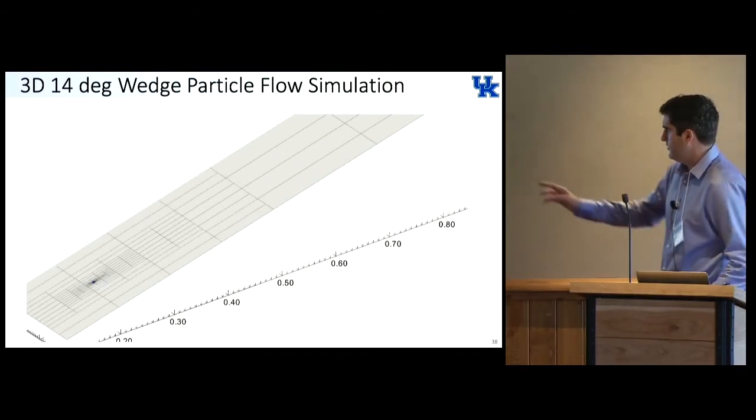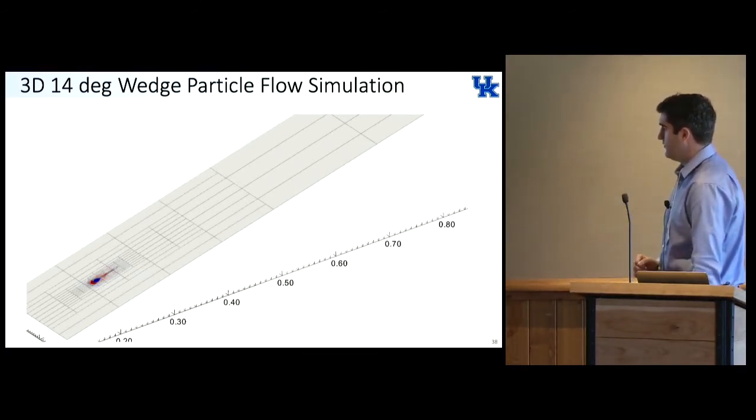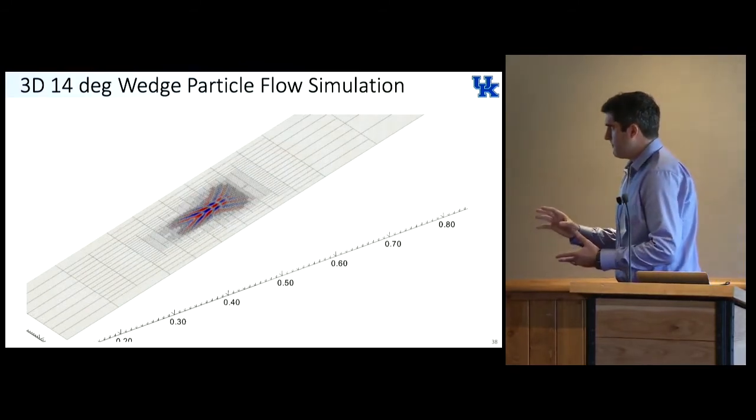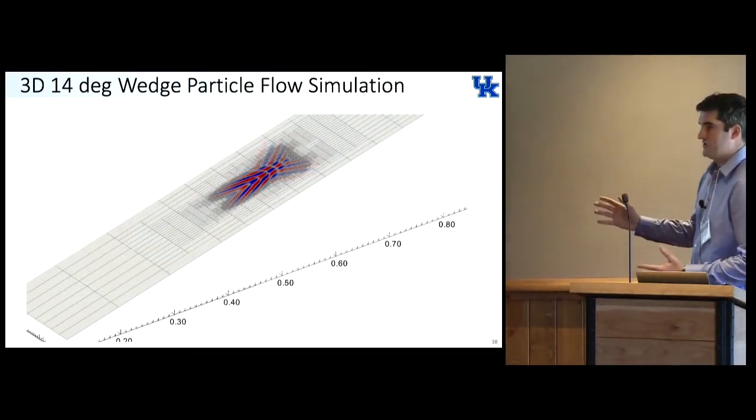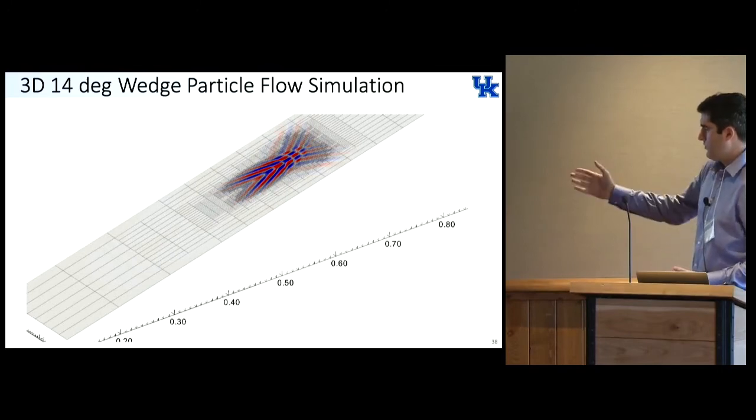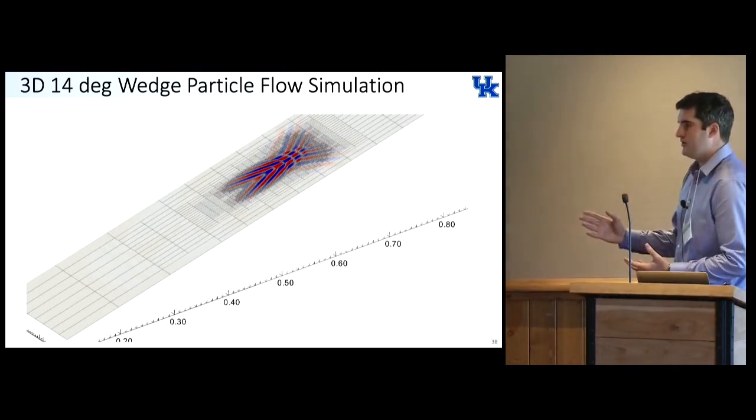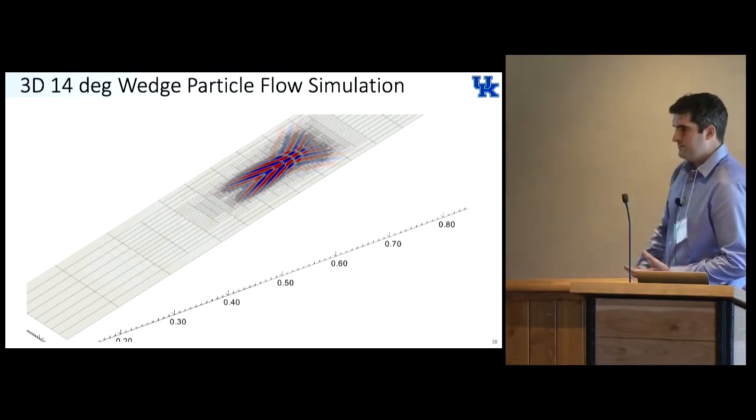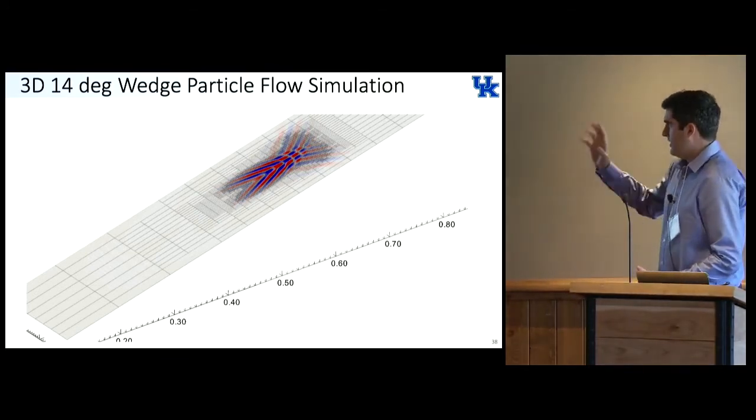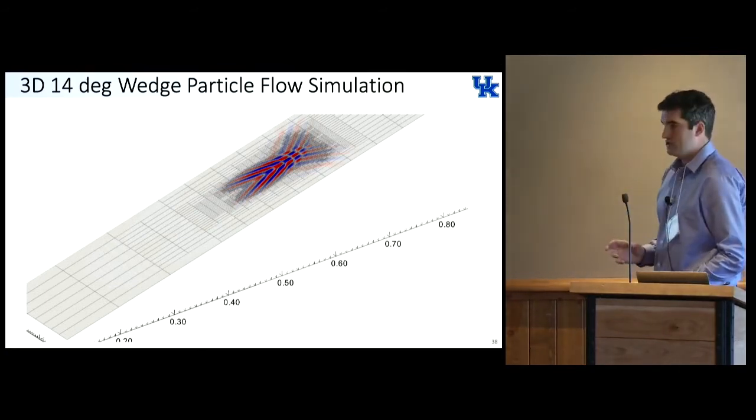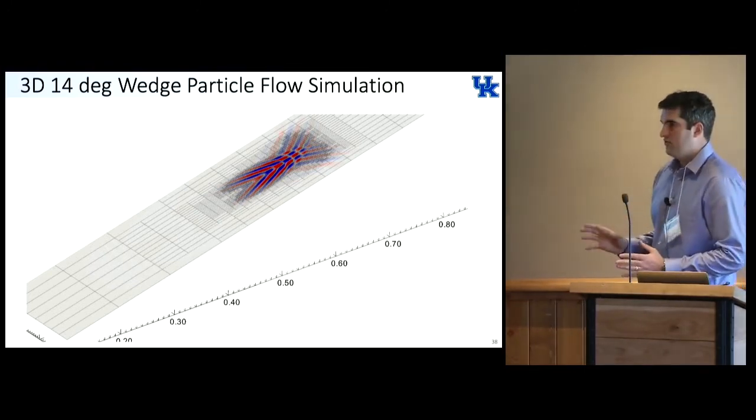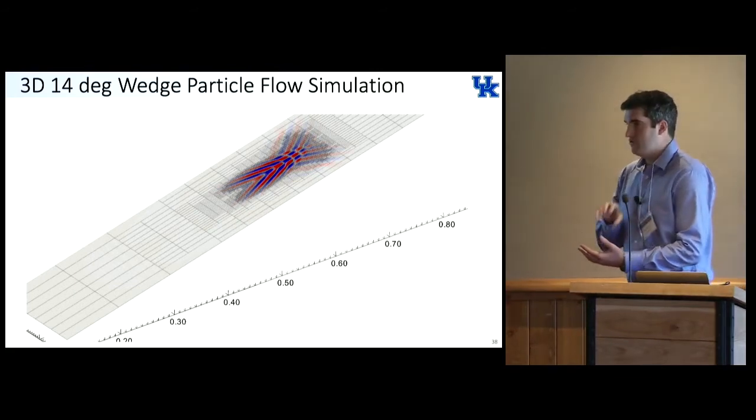Here we show the AMR tracking the first mode as the wave packet propagates downstream, refining, derefining. Obviously on a static mesh, the whole thing would have to be resolved the entire way. Whereas in this case, if it's a static mesh approach, this problem scales with the length of the domain. If I want to make the domain twice as long, but with the AMR approach, the problem scales with the size of the wave packet. It doesn't matter if I make the domain two times as long, it's just about the wave packet. That's where all the resources are being redistributed to track the instability.